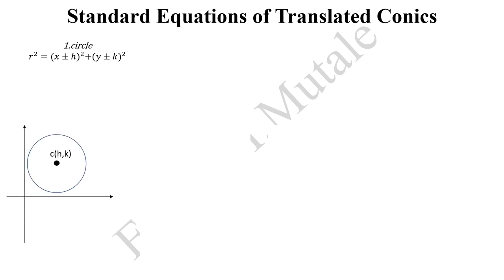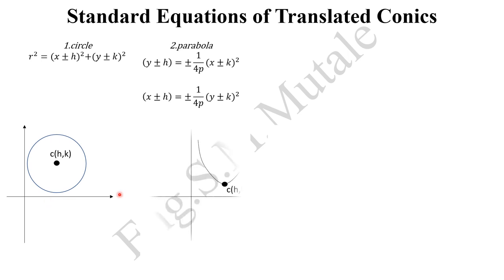Let's look at standard equations of translated conics. We have what we call a circle — a circle will just change its center, so instead of (0,0) it will have (h, k). That will be the standard equation of a circle under translations. For the parabola it's the same thing — it will turn at a new center (h, k), and these forms tell you whether it's facing up or down depending on the sign.